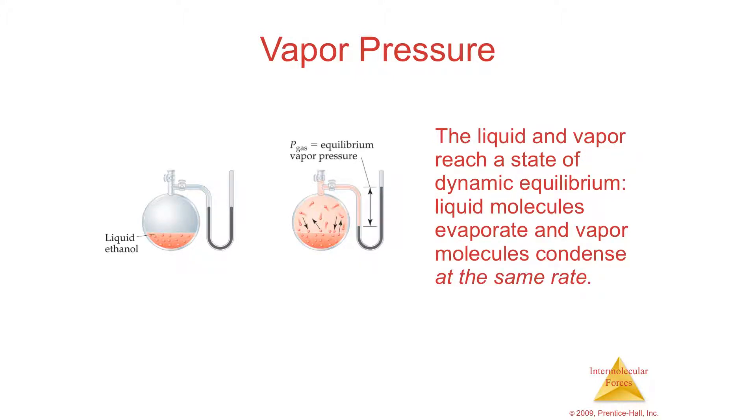The liquid and the vapor reach equilibrium. That's called dynamic equilibrium. It's called dynamic because all the ones that are escaping are the same as the ones coming back down. You're going to get some out, some in, some out, some in, and the same amount of out is the same amount of in. That's dynamic equilibrium.